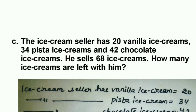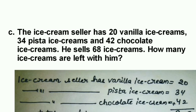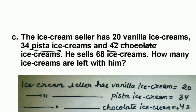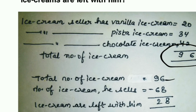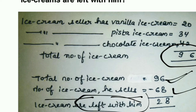The ice cream seller has 20 vanilla, 34 pista, and 42 chocolate ice creams. He sells 68 ice creams. How many are left? First find the total: 20 plus 34 plus 42 equals 96 ice creams. He sold 68, so remaining: 96 minus 68 equals 28 ice creams left.